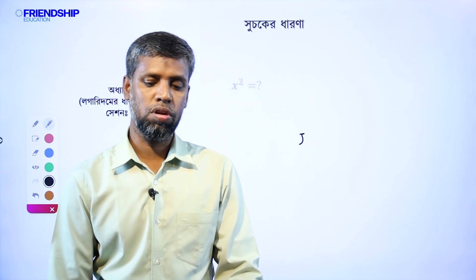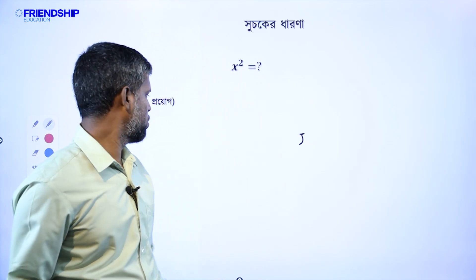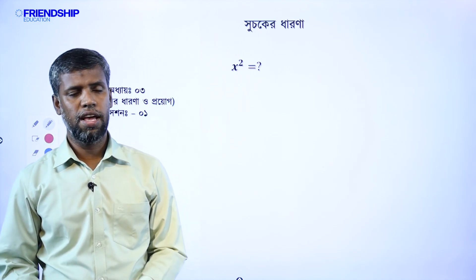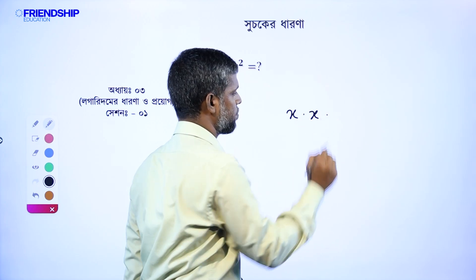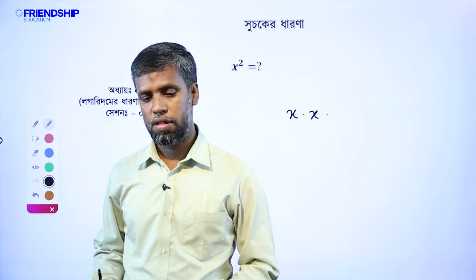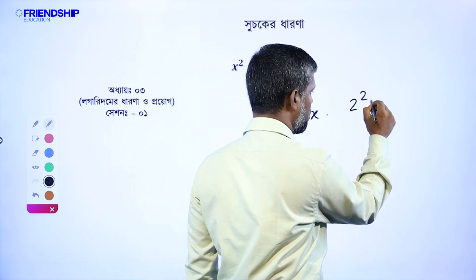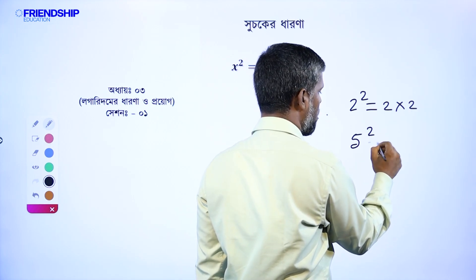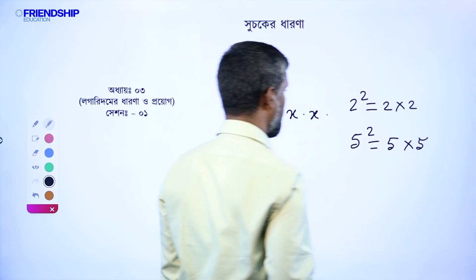I will take the first class. I will tell you, x square is equal to what? x square means x into x. 2 square means 2 into 2. 5 square means 5 into 5.